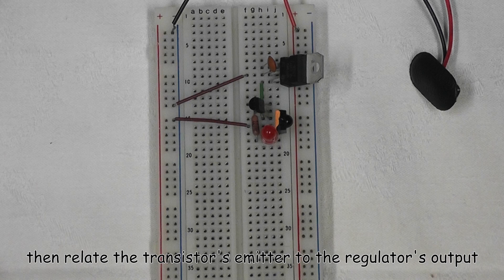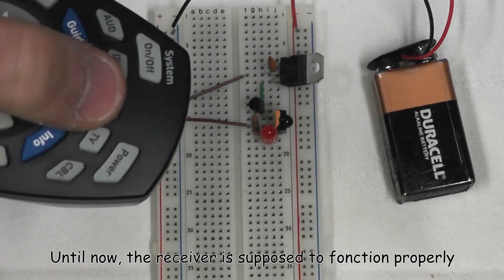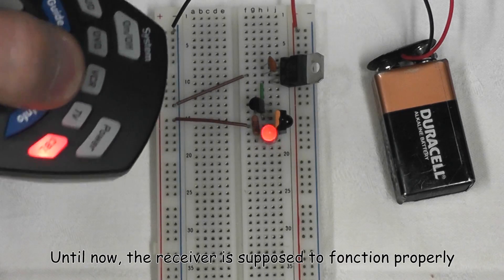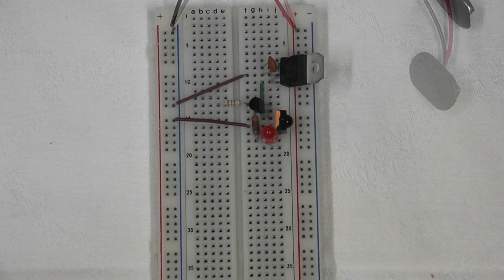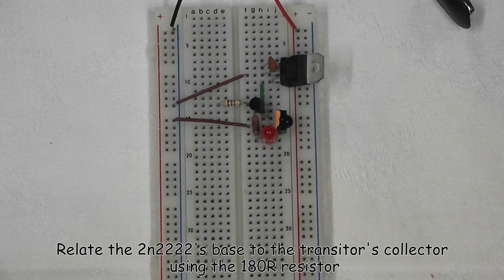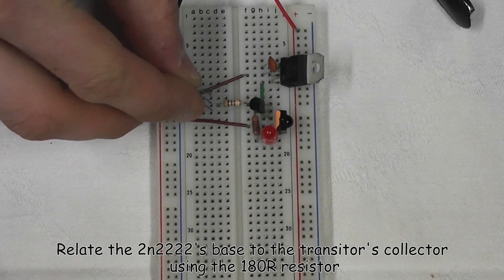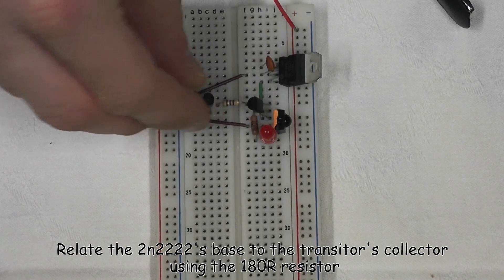Then relay the transistor's emitter to the regulator's output. Till now the receiver is supposed to function properly. Relay the 2N2907's base to the transistor's collector using the 180 ohm resistor.